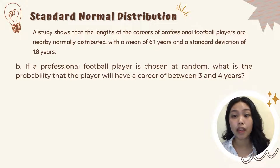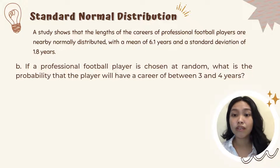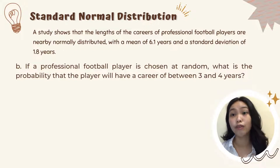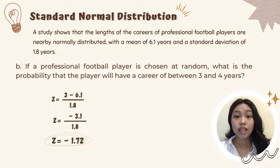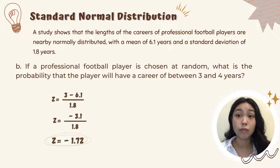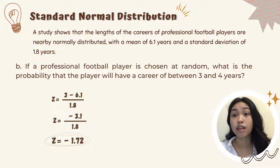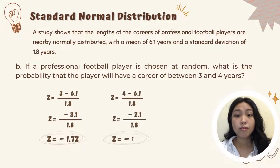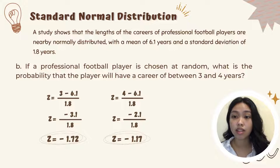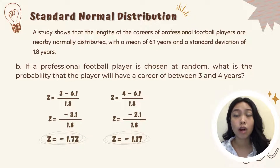Dito naman, probability of a player to have a career between 3 and 4 years ang kailangan natin hanapin. Since dalawa yung values natin and in-between siya, kailangan natin kuhain yung Z-score ng 3 at 4. So, 3 minus 6.1 divided by 1.8, this is equivalent to negative 3.1 over 1.8, or negative 1.72. Similar to the previous equation, 4 minus 6.1 divided by 1.8 is equal to negative 2.1 over 1.8, or negative 1.17.